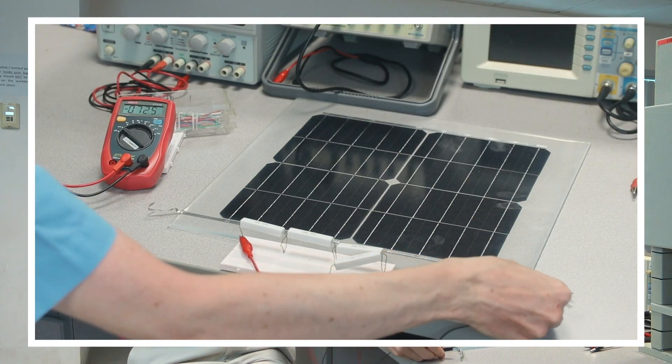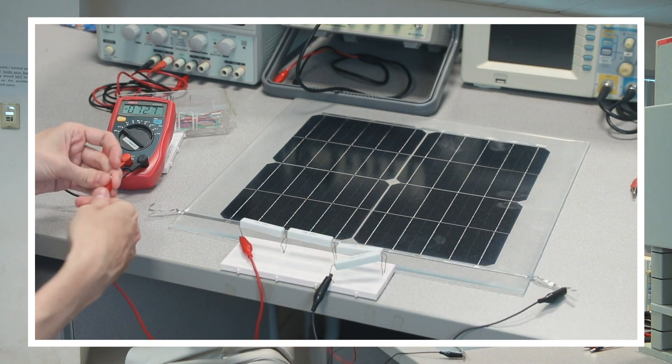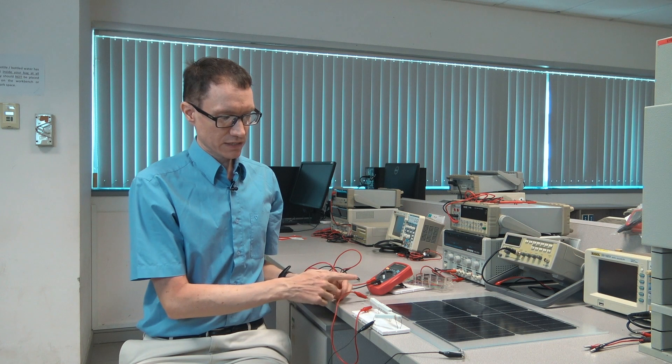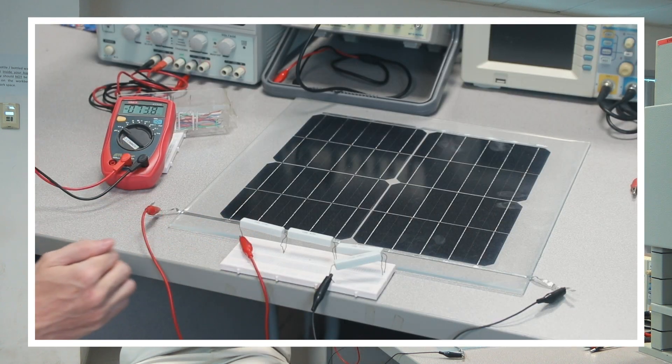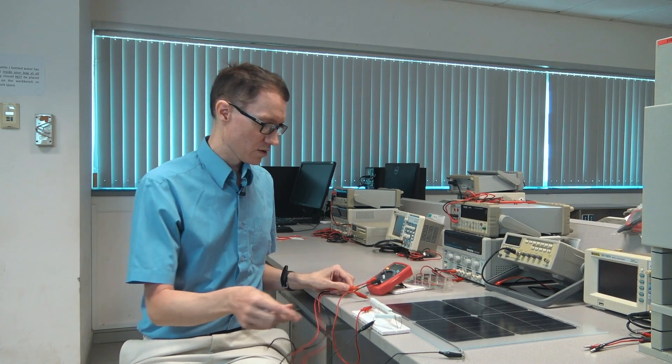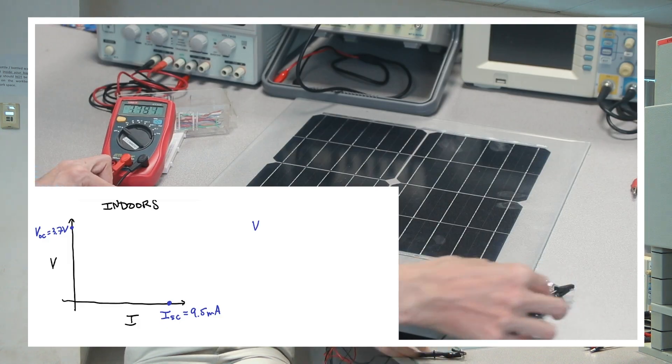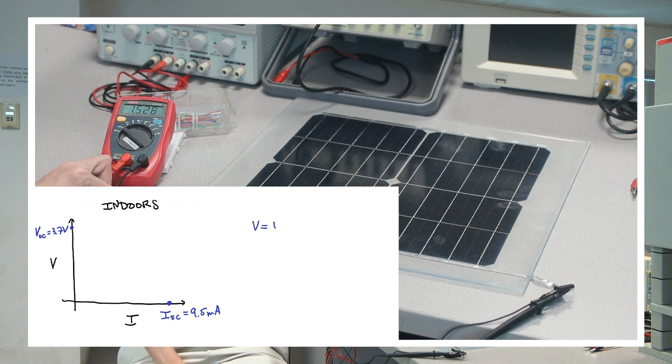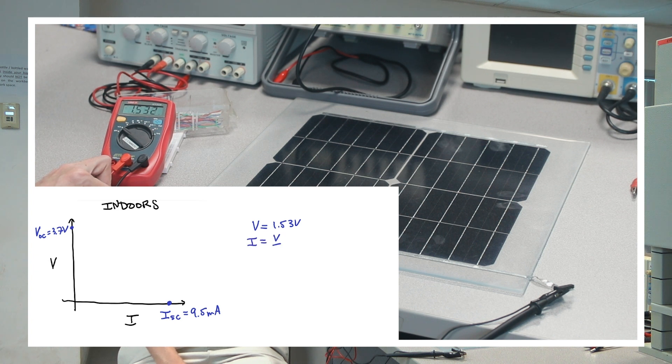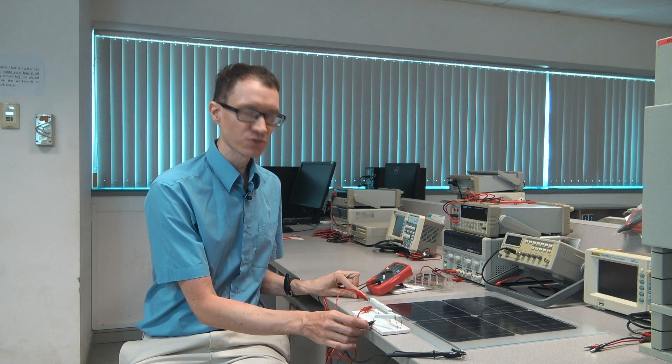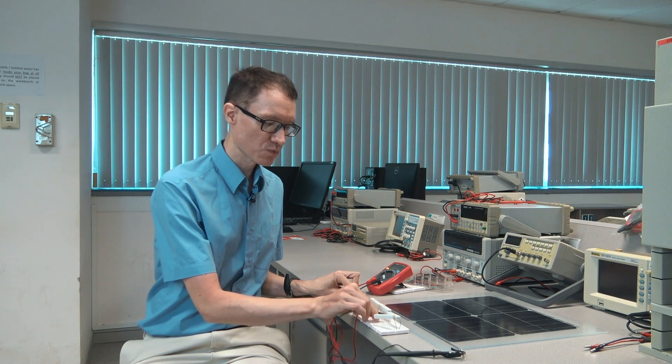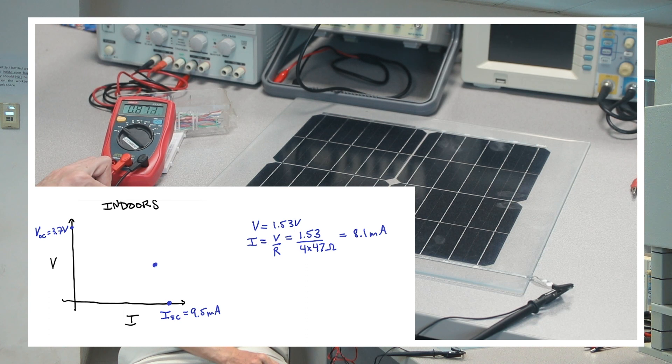I'm now going to do two measurements with resistors as the load attached to the solar cell. So right now, the solar panel is connected to four 47-ohm resistors wired in series, and I'm going to check the voltage. And in office lighting, it looks like we have about 1.53 volts. I'm now going to change it to two 47-ohm resistors wired in series, and the voltage is now around 0.85 volts or so.